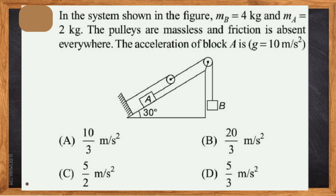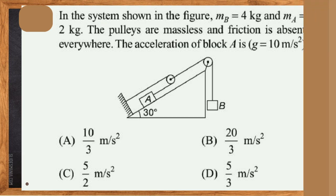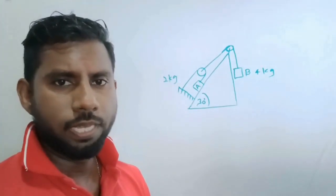In the system shown in the figure, mB is 4 kilograms and mA is 2 kilograms. The pulleys are massless and friction is absent everywhere. Find the acceleration of block A. It's a different kind of pulley type question.